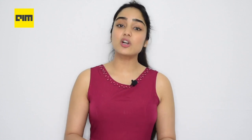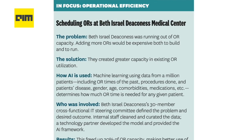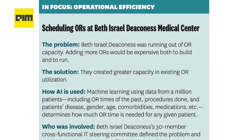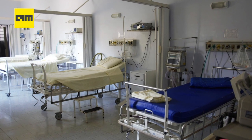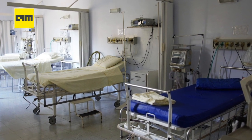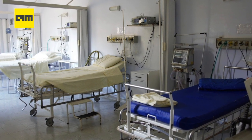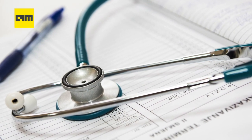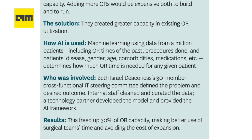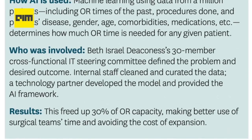From An Executive's Guide to AI, the report highlights how machine learning was used to solve a problem at Beth Israel Medical Center. The problem was that its operating room capacity was stretched thin. Machine learning, using data from a million patients including OR times of the past, procedures done, and patient's disease, gender, age, morbidities, medications, etc., determines how much OR time is needed for any given patient. The Medical Center freed up to 30% OR capacity as a result.